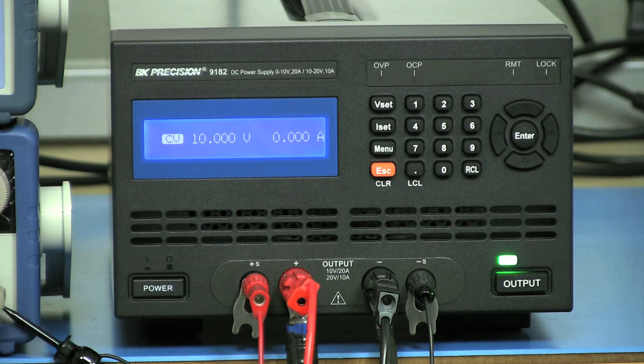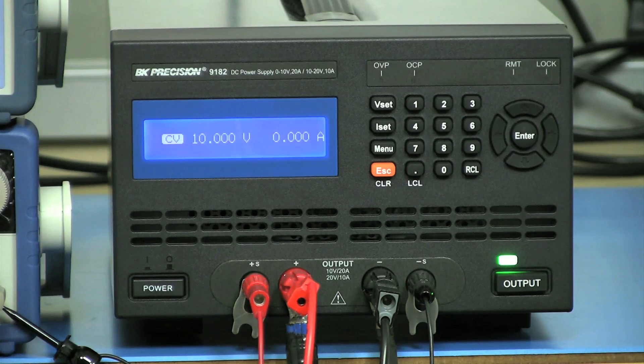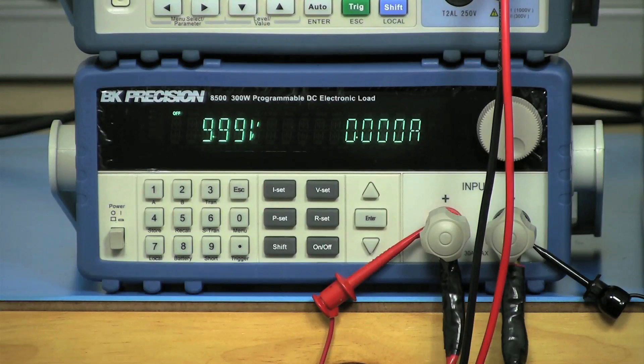For setup, I have the 9182 connected to the 8500 from positive to positive, negative to negative terminal. Because the current will be as high as 20 amp, be sure to use wires with at least 14 AWG wire gauge.